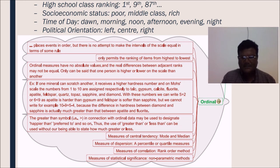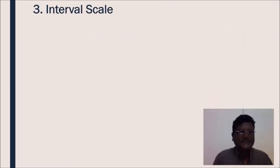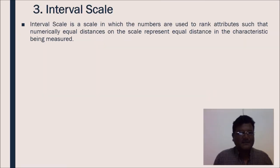The greater than symbol in connection with ordinal data may be used to designate happier than, preferred to, and so on. Thus, the use of greater than or less than can be used without our being able to state how much greater or less. Measures of central tendency can be used are mode and median. Measures of dispersion - percentile or quartile measures. Measures of correlation - rank order method. Measures of statistical significance - non-parametric methods.